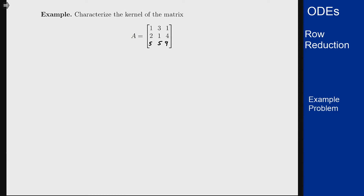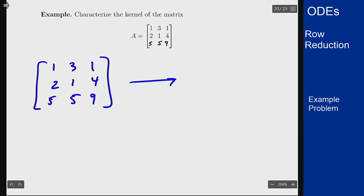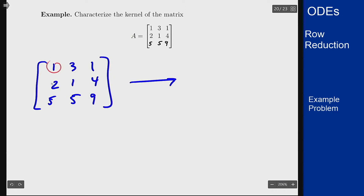We'll start with the matrix itself and row reduce. We already have a 1 in the top left corner so that can stay where it is. We want to use that 1 to clear away the two numbers beneath it.